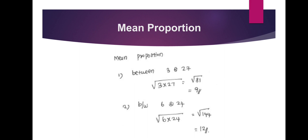Now we talk about the first concept: mean proportion. The mean proportion between two numbers — if you look at the square root, the two numbers are multiplied. For example, between 3 and 27: 3 × 27 = 81, and the square root is 9. Another example: 6 and 24 — the two numbers give 144, and the square root is 12.